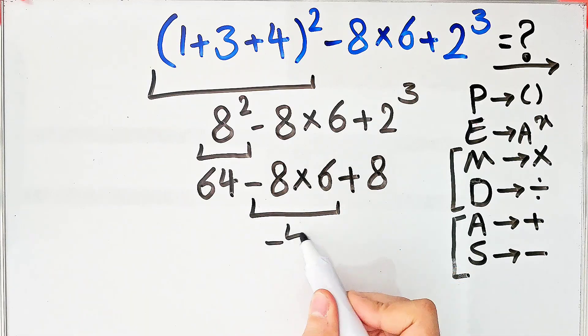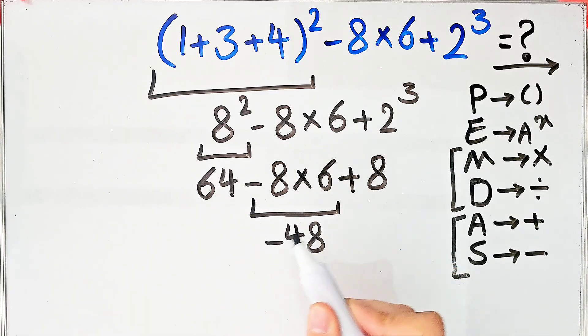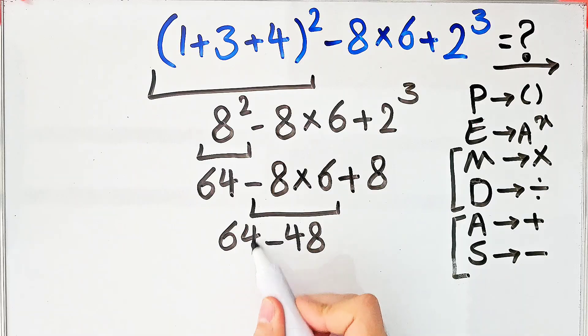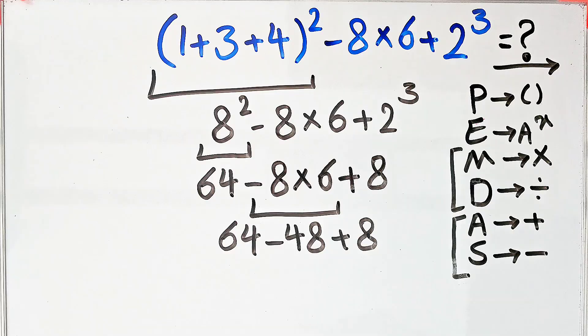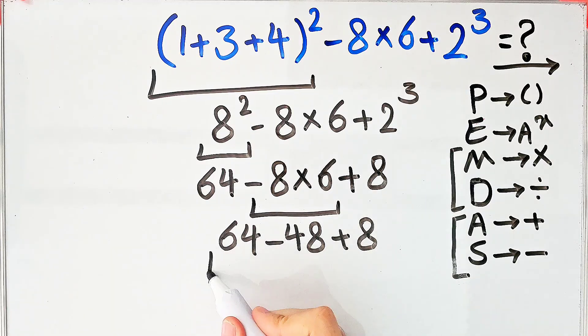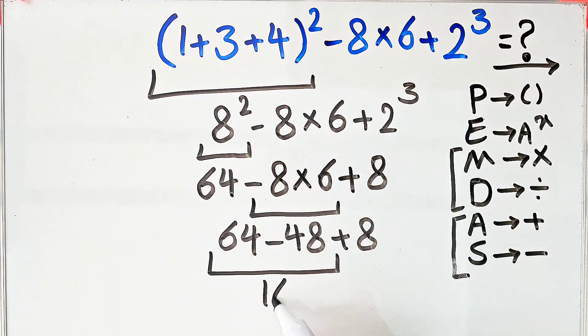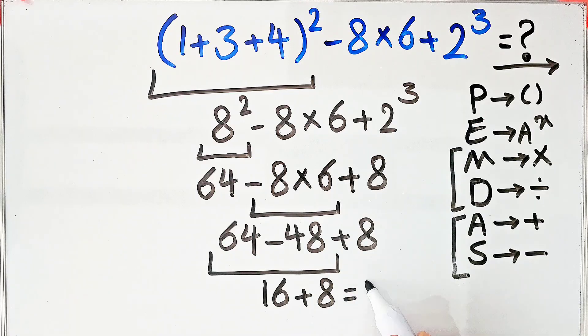Now we have sixty-four minus forty-eight then plus eight. Sixty-four minus forty-eight equals sixteen and sixteen plus eight equals twenty-four. The final answer of this question equals twenty-four.